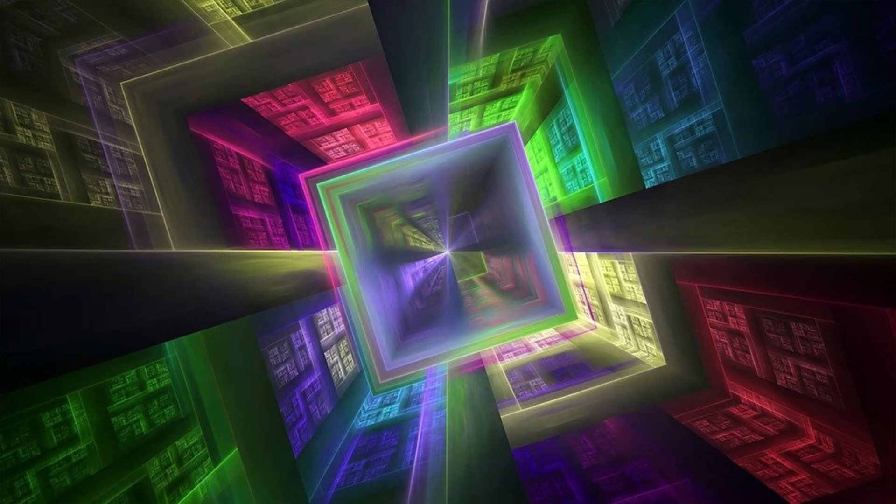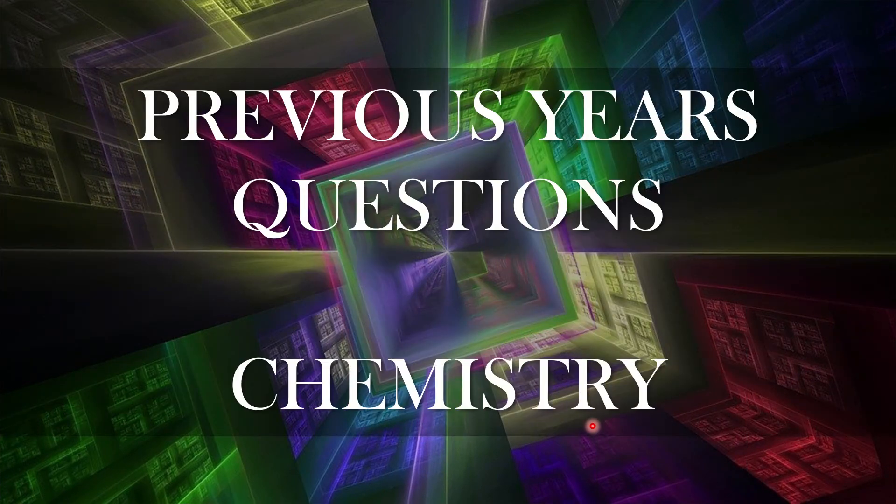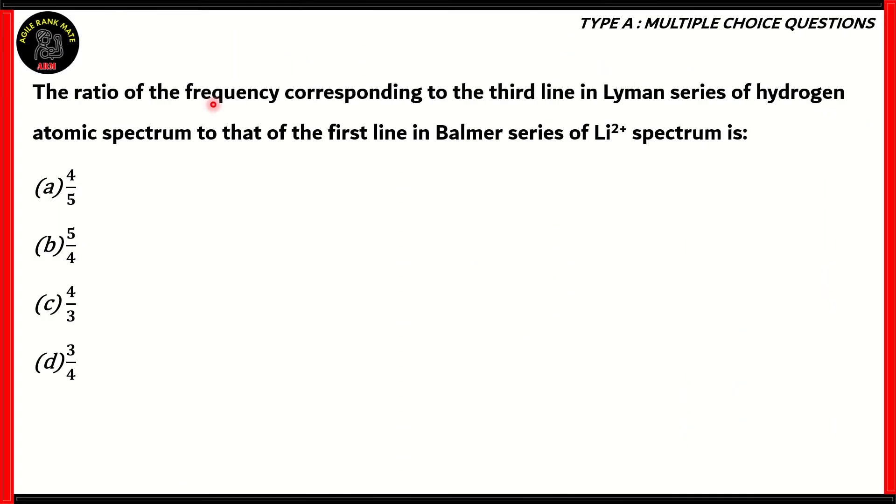In this particular episode, we will be dealing with questions of chemistry. So, let's start off. Here's our first question: The ratio of the frequency corresponding to the third line in the Lyman series of hydrogen atomic spectrum to that of the first line in the Balmer series of lithium-2-plus spectrum is 4/5, 5/4, 4/3, or 3/4. So, how do we solve this question?